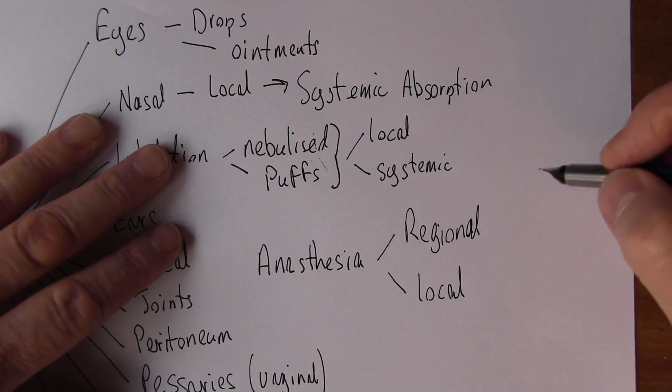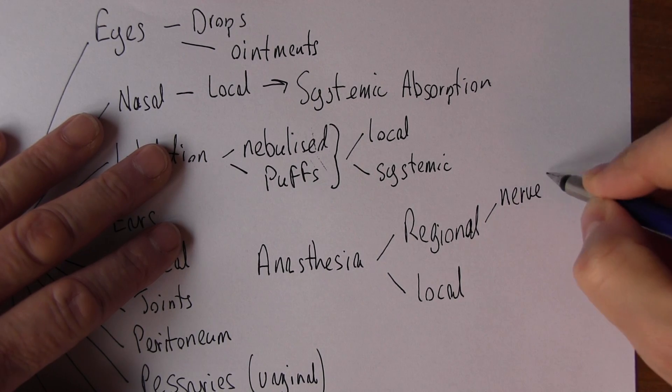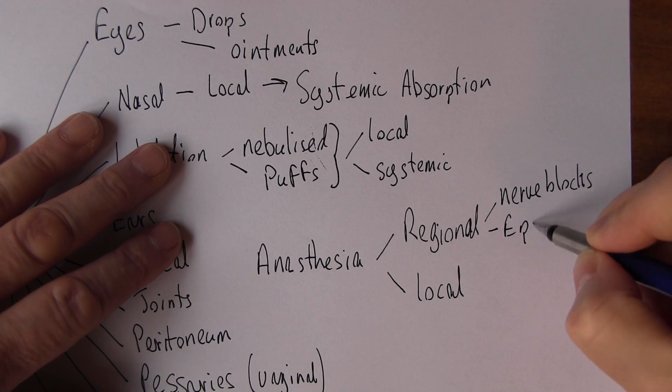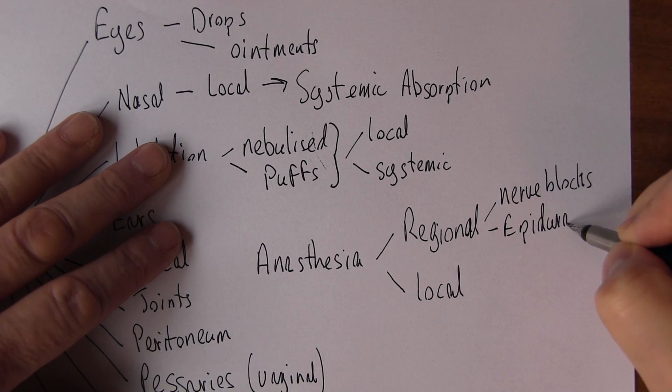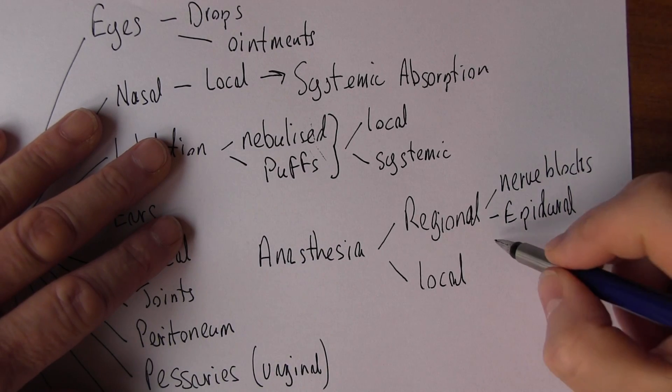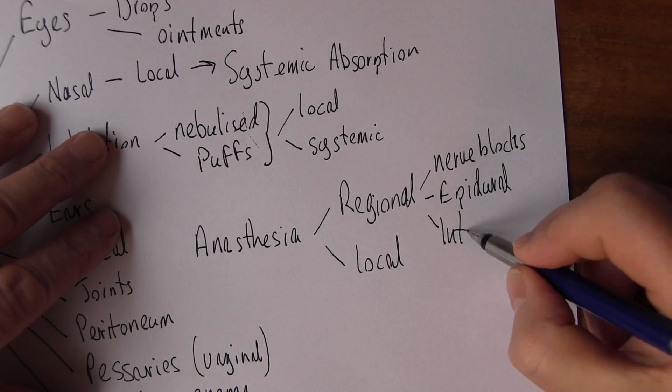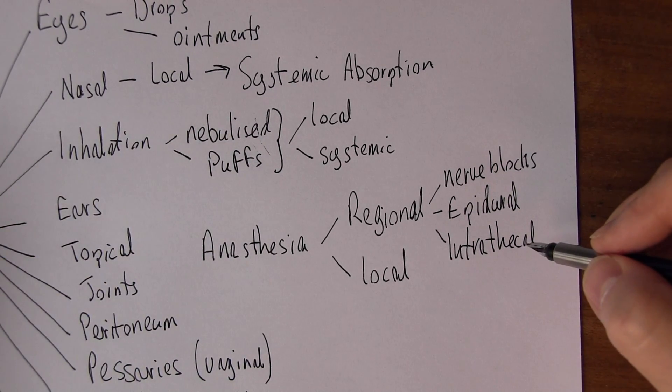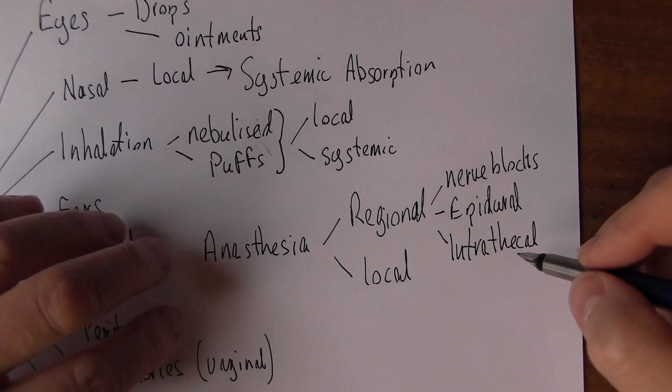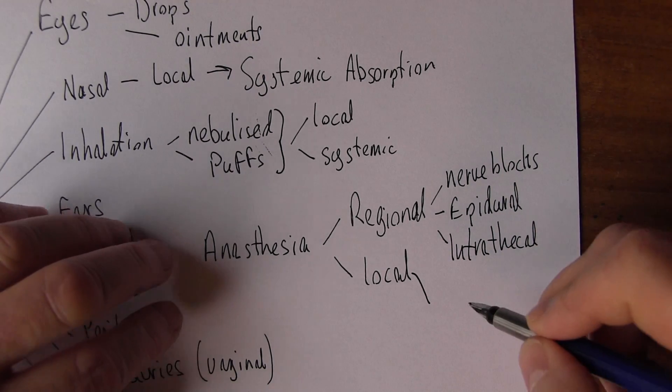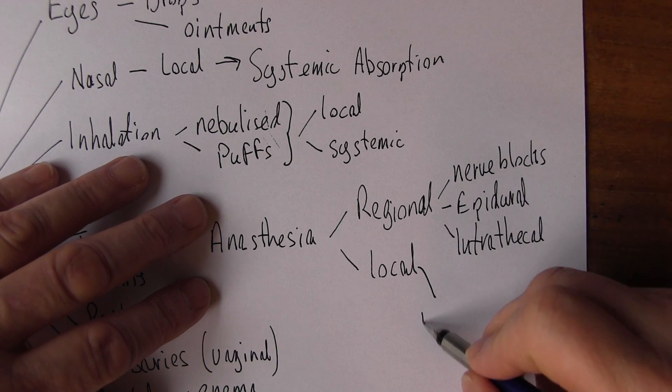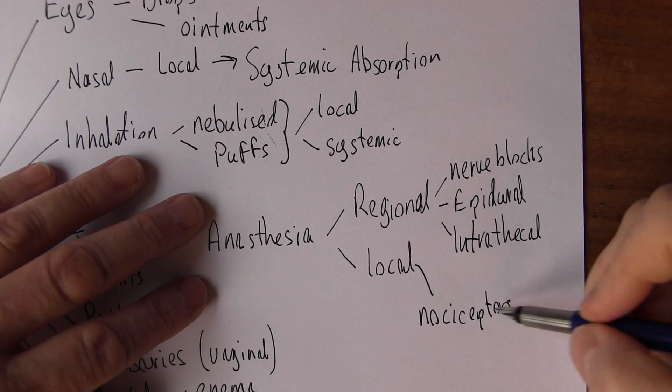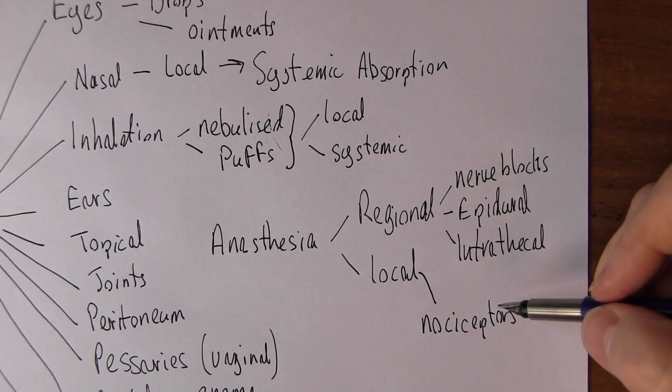So regional can be nerve blocks, could be epidural into the epidural space, intrathecal would be directly into the cerebrospinal fluid, whereas local is just going to block local nociceptors or the dendrites leaving local nociceptors.